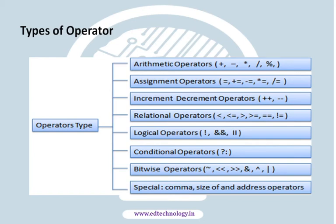Hey guys, it's Navajo Singh Jadeja and welcome to today's lecture on operators. In the earlier lecture we have seen different types of operators on the basis of number of operands. C supports basically eight types of operators which includes arithmetic operators, assignment operators, increment decrement operators, relational operators, logical operators, conditional operators, bitwise operators, and a special class of operators. In this video we will be seeing each of them in detail with an example.